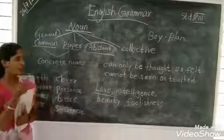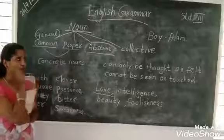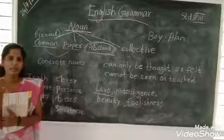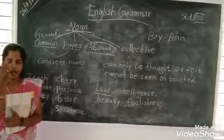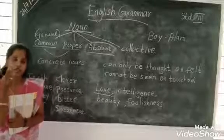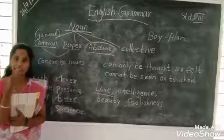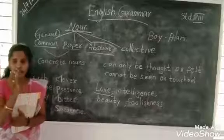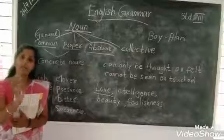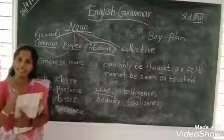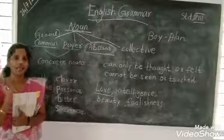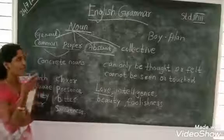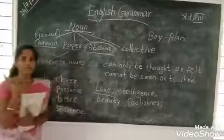Abstract noun cannot be seen or touched. It cannot be seen or touched. It cannot be seen or touched. Not like any other noun — abstract noun cannot be seen or touched.